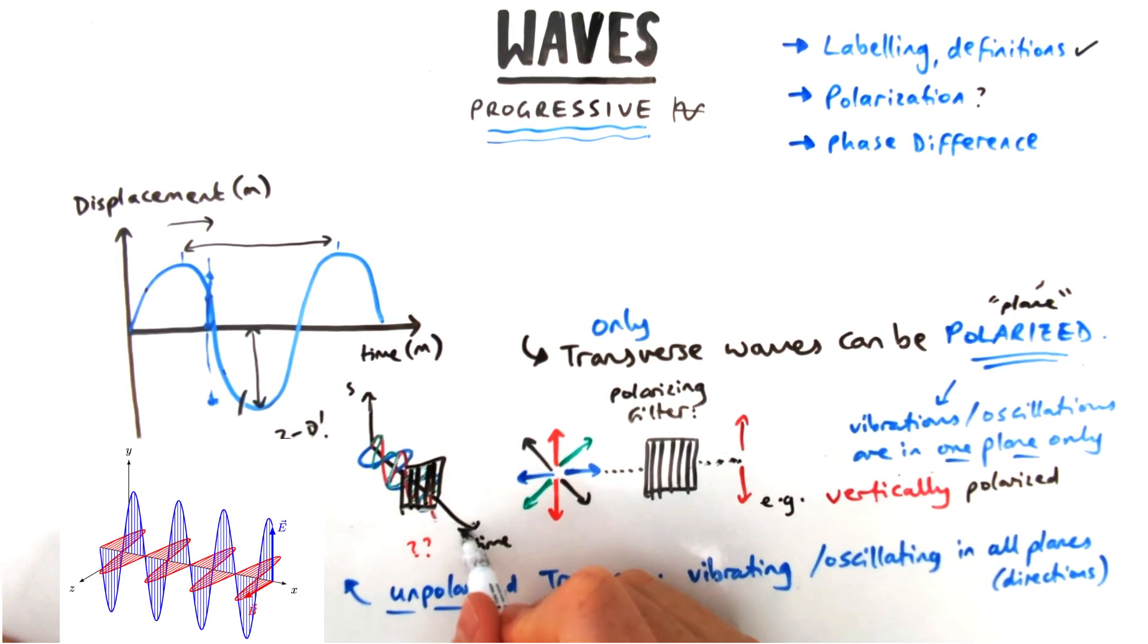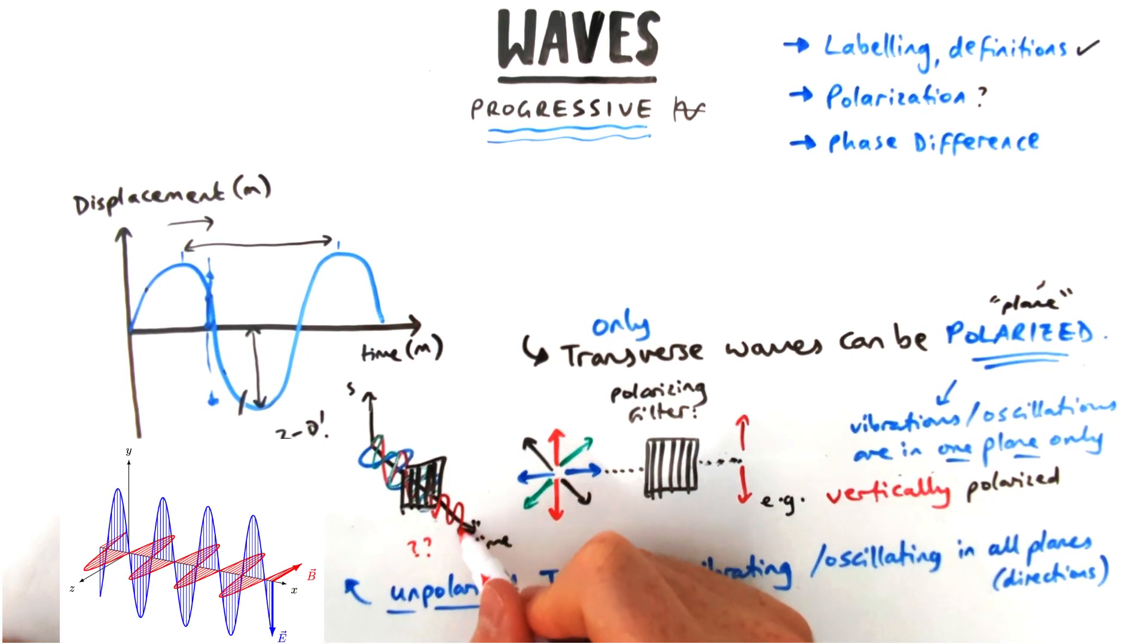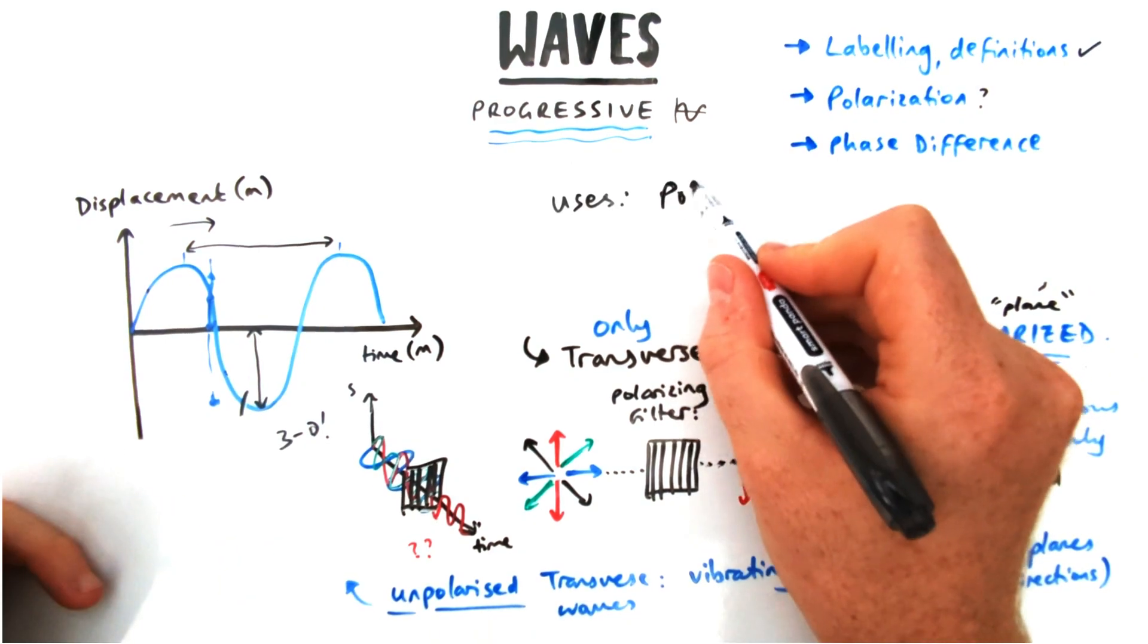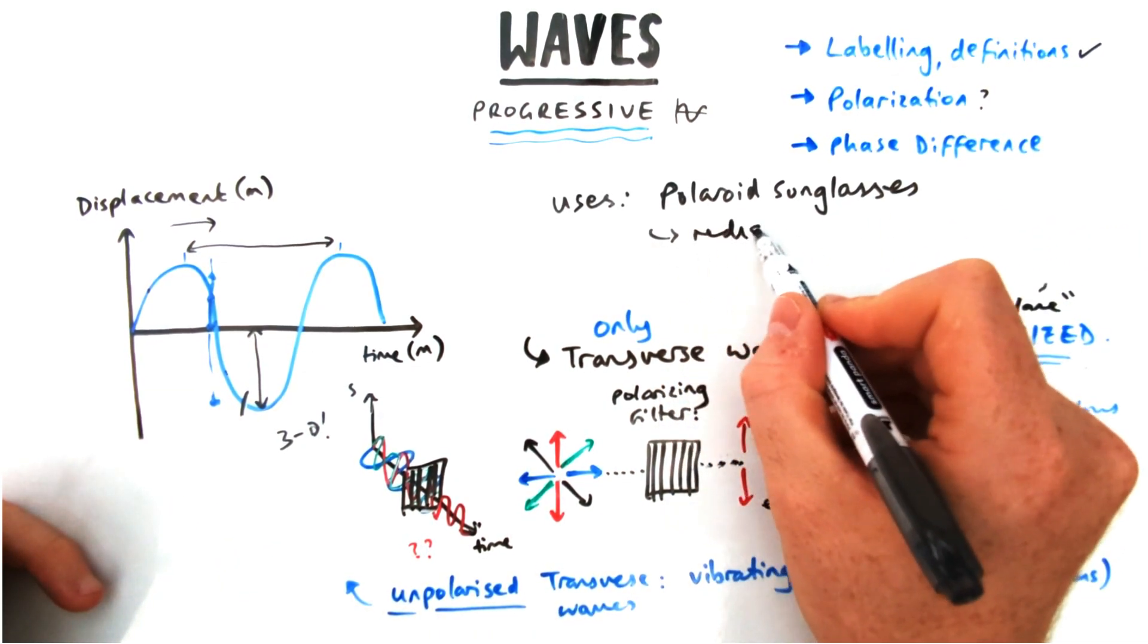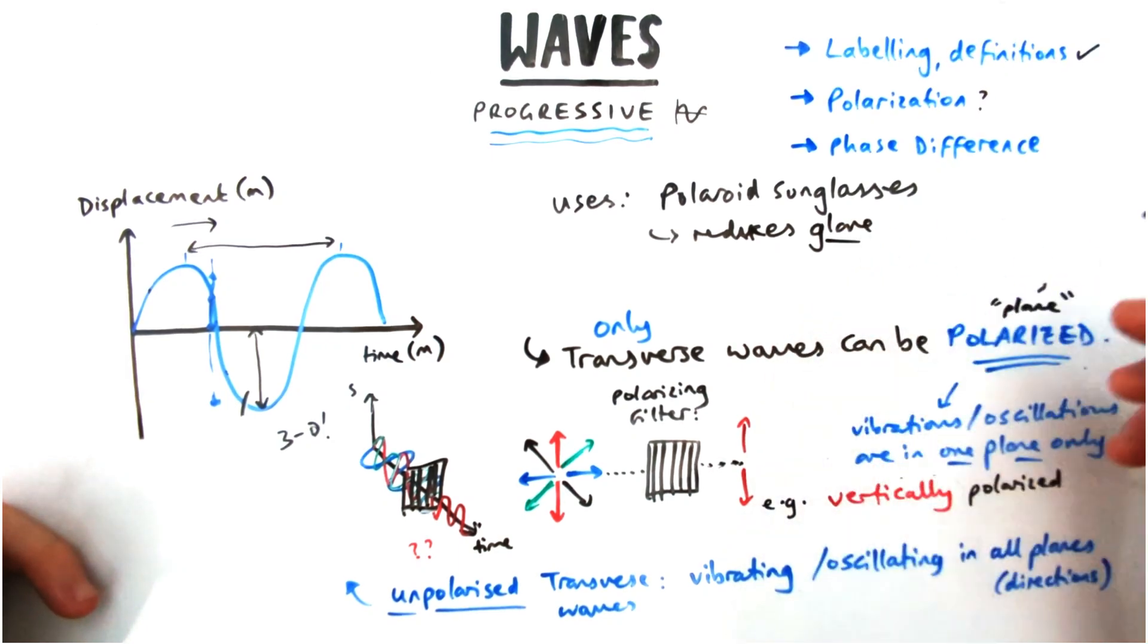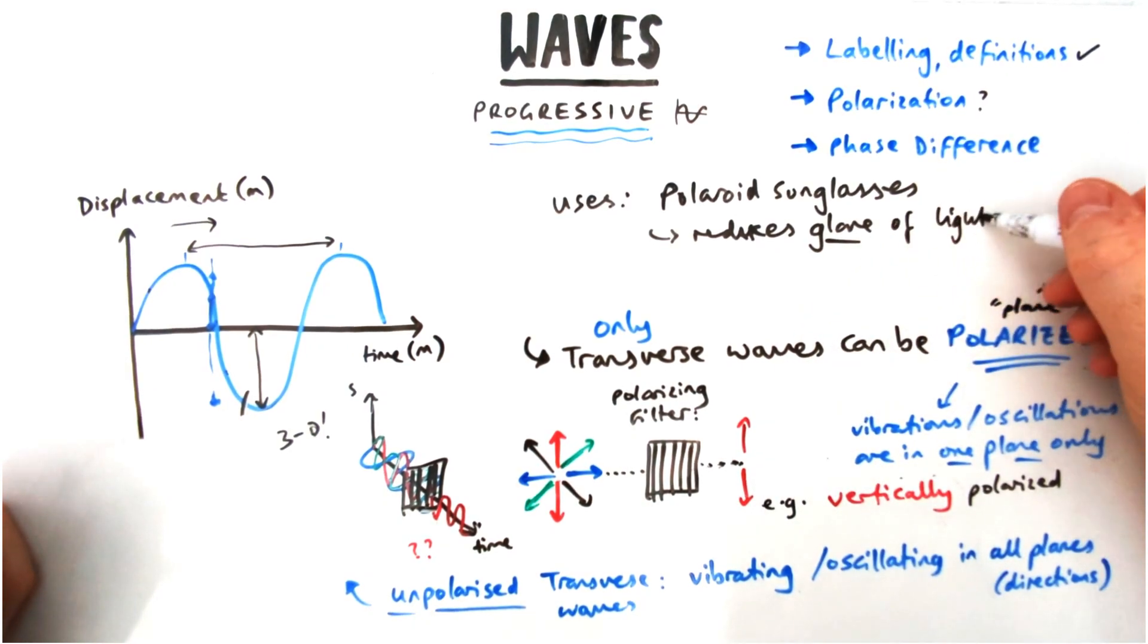Where might you use this? Why is this important? This is the kind of technology that's used in polarized sunglasses which reduces glare. The glare means the light that's reflecting off bodies of water, so lakes or the sea, etc., which tend to be polarized.